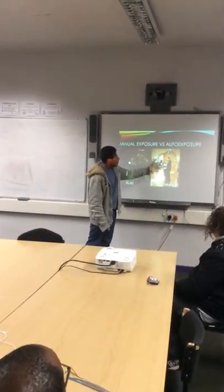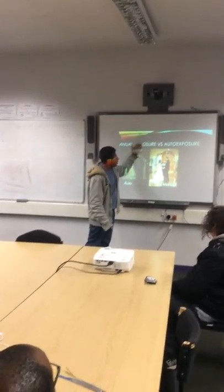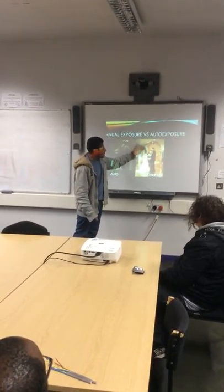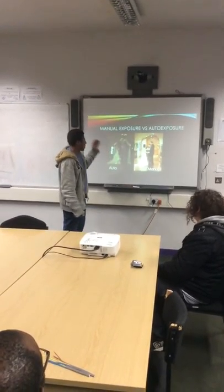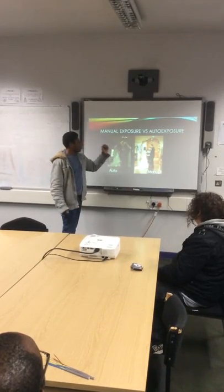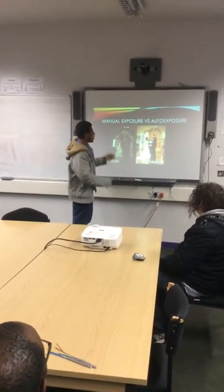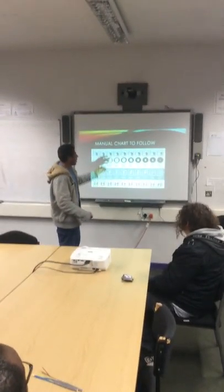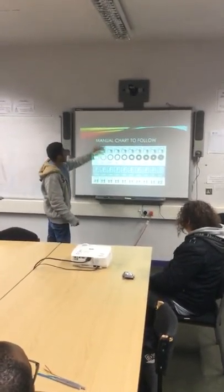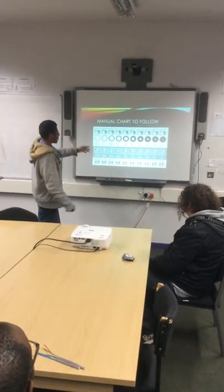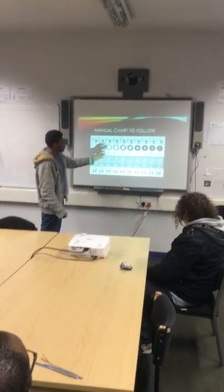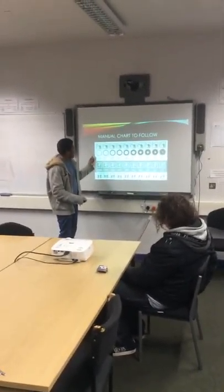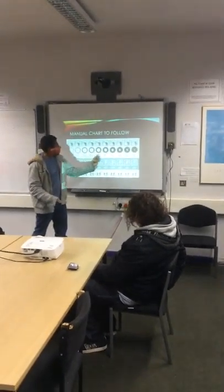Manual exposure versus auto. Automatic is what everyone uses at the moment — the computer is doing all the work and figuring out the mathematics. Manual is when you do it yourself because you understand the exposure for the background and the people. Manual is better when you learn how to do it, but auto can help as well — you'd be surprised nowadays what auto can do.